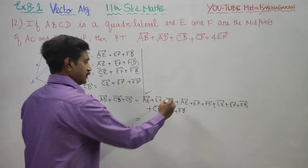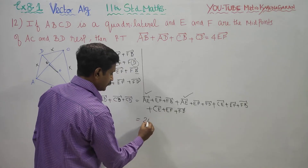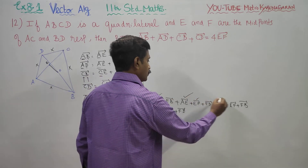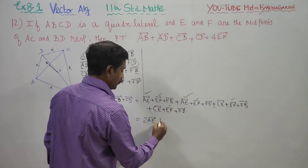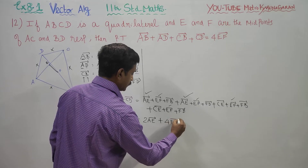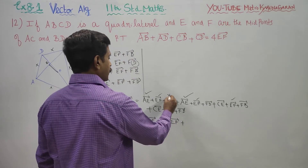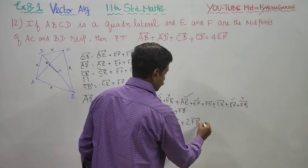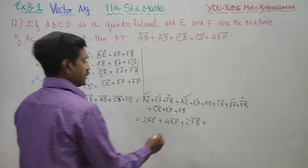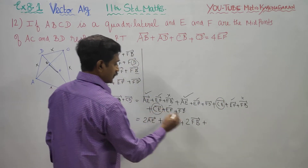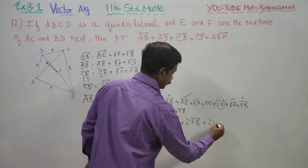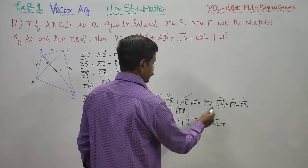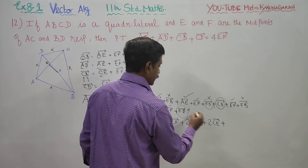Counting: we have 4 times EF, 2 times FB, 2 times CE, and 2 times FD.